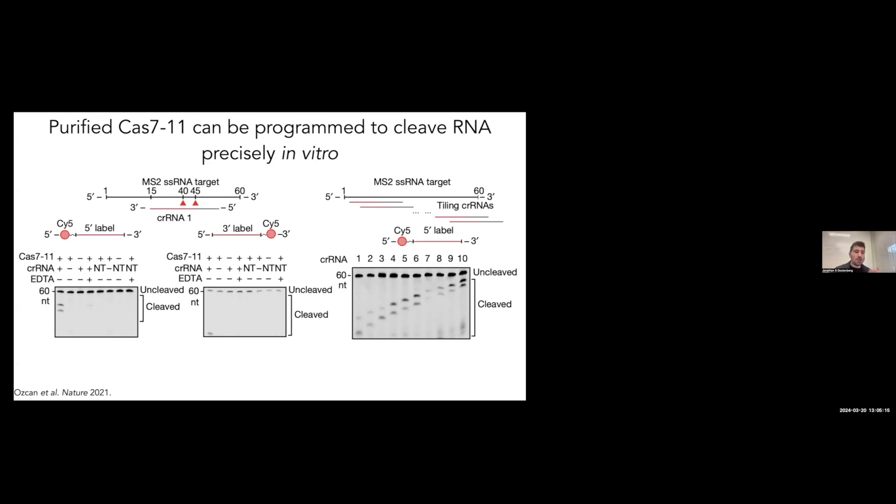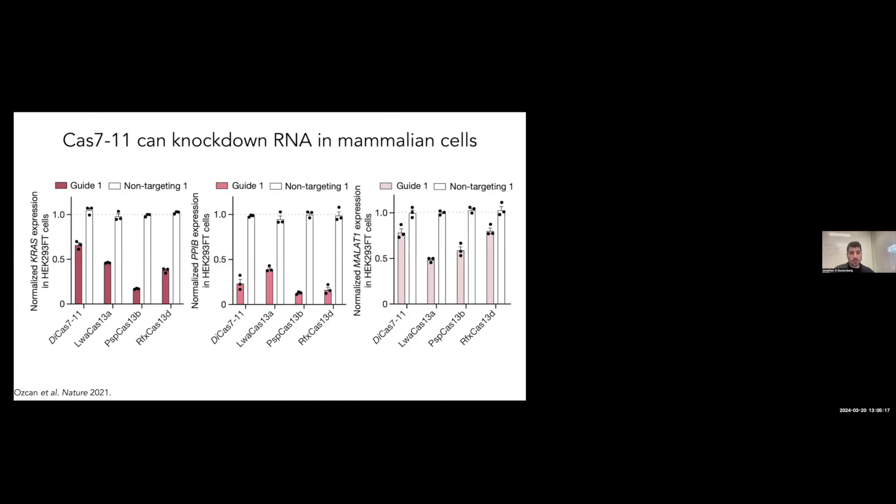Does this work in mammalian cells? Yes, we were able to reconstitute it in mammalian cells and compared it to other RNA targeting CRISPR systems like the Cas13s. We found that for two mRNA transcripts and one non-coding transcript, it could actually have levels of knockdown comparable or better than in some cases Cas13 RNA targeting system. So this works in mammalian cells as an RNA targeting system.